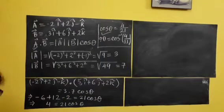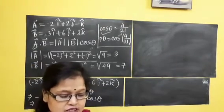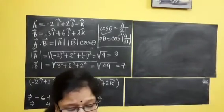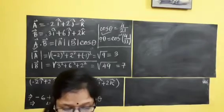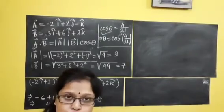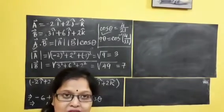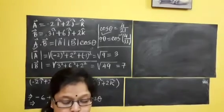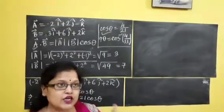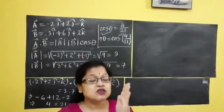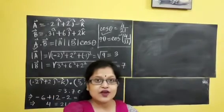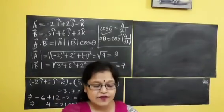Angle between the two vectors. Clear? I am coming for the next numerical. The next numerical is: find the vector which is parallel to the resultant of vector A and B, where A equals 2i-cap minus 6j-cap minus 3k-cap and vector B equals 4i-cap plus 3j-cap minus k-cap. First I will calculate the resultant of these vectors.